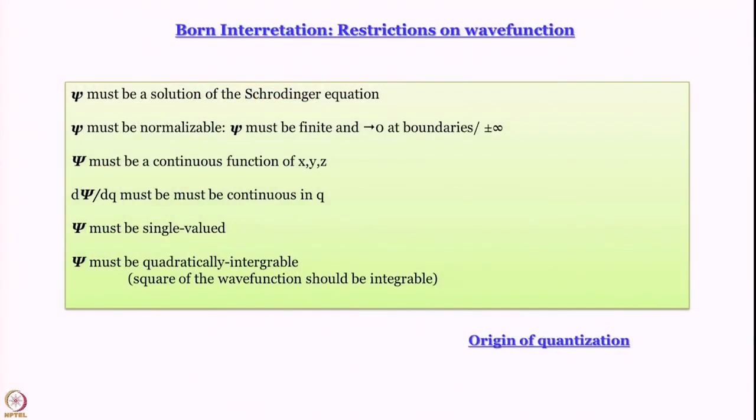The first derivative — I should note — does not strictly have to be continuous. We are going to discuss an example today for particle in a box where the first derivative is actually not continuous. But ψ must be single-valued: if for a given value of x ψ has three or four different values, that means the probability of finding the particle there is three or four, which does not make sense. ψ also has to be single-valued — something we will make use of when we talk about particle in a ring and the hydrogen atom — and ψ must be quadratically integrable, otherwise it cannot really serve as a solution of the Schrödinger equation.